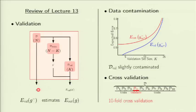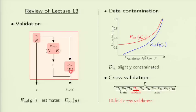We get g, and we use the validation error on the reduced hypothesis to estimate out-of-sample performance on the hypothesis we are actually delivering. There is a question of how accurate an estimate this would be for E out. We found that k cannot be too small and cannot be too big for this estimate to be reliable. We ended up with a rule of thumb of about 20% of the data set going to validation to give a reasonable estimate.